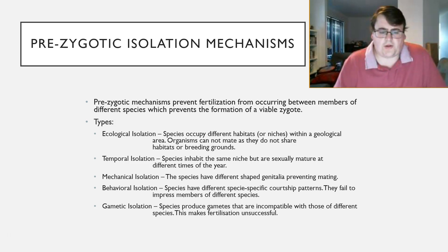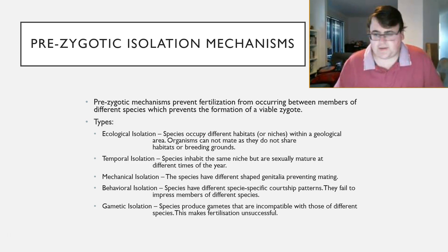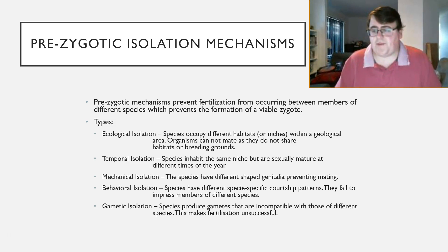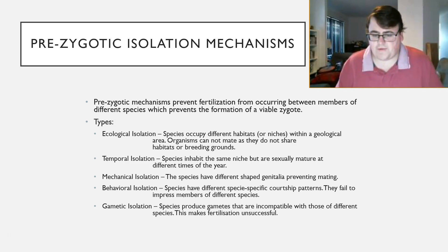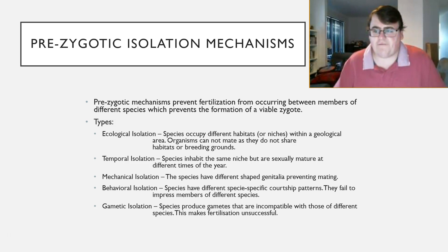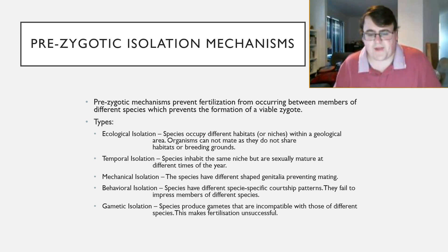The first one is ecological isolation — very straightforward. The two species occupy different habitats or niches within that geographical area, so they can't breed because they don't share a habitat or a breeding ground. They can't physically get together to breed. We'll look at an example of that in a moment.